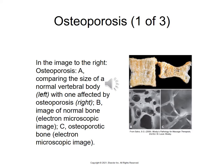Osteoporosis. This shows the problems caused by osteoporosis. You can see how the bone looks kind of like Swiss cheese. Part A shows the size of a normal vertebral body compared with one affected by osteoporosis on the right. Below that is the image of a normal bone, and C is the osteoporotic bone — you can see how much bone is missing in C compared to B.